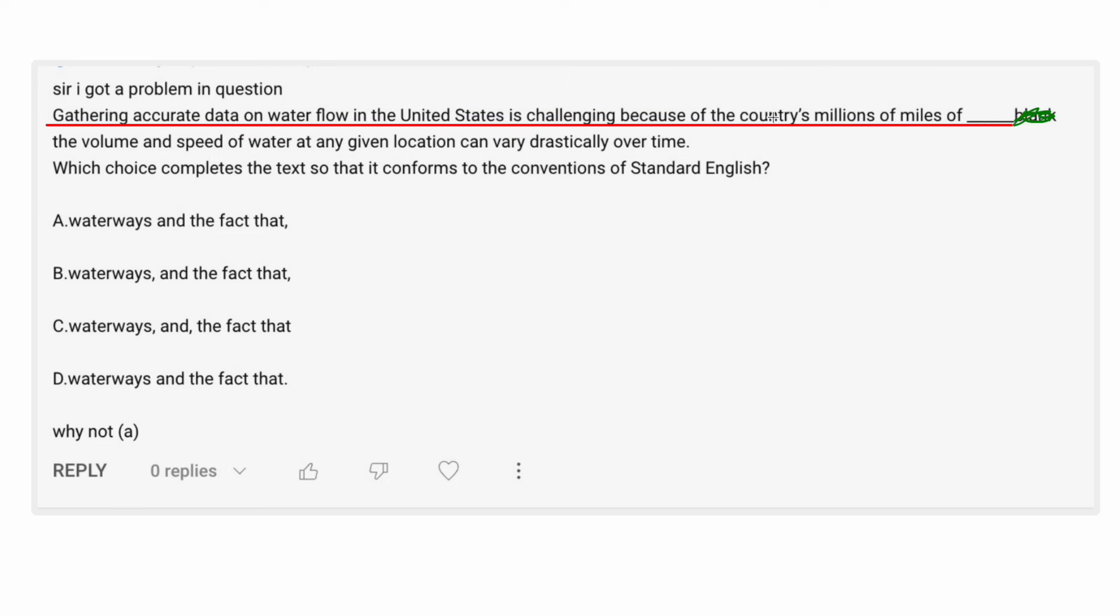I don't want that line to cover up the sentence. Gathering accurate data, okay, is challenging because, okay, blah, blah, blah. Yeah, I mean, that could have been an independent clause. Gathering accurate data is challenging because of the country's millions of miles of waterways. But looking at the answer choices, we can see that they're going to kind of extend things and make this whole sentence into a single long independent clause. But here I think, yeah, that's why I was questioning the period in the previous one, because I had looked at this one. And that, I think that period is not supposed to be there.